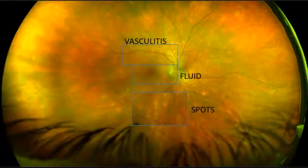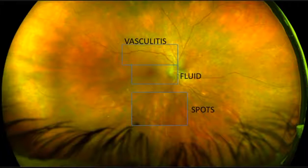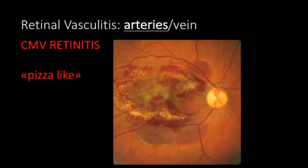But if we go back to the color fundus, I want you to focus on three main features that are the main topic of my talk: the vasculitis, the retinal spots, and the macular fluid. So let's start talking about the vasculitis.